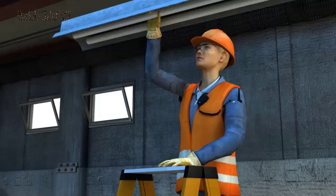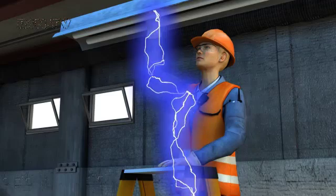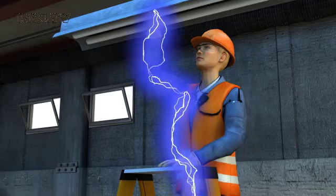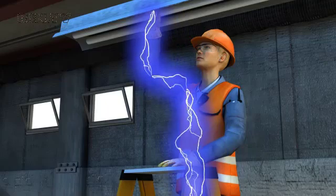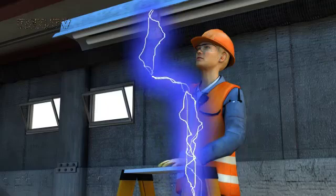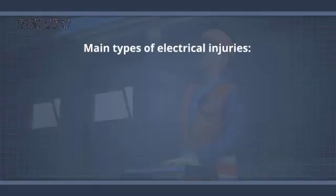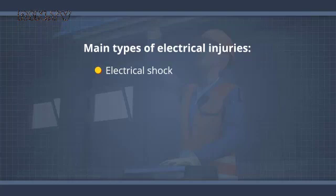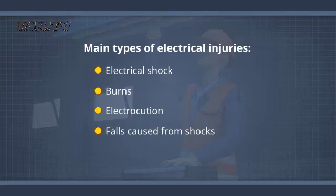An electric shock can be delivered any time an electrical current passes through the body. This can happen through direct contact with an electrical circuit or through arcing as the electricity passes through the air. The injuries resulting from electrical shocks range from minor burns to electrocution and death. There are four main types of electrical injuries: electrical shock, burns, electrocution, and falls caused from shocks.